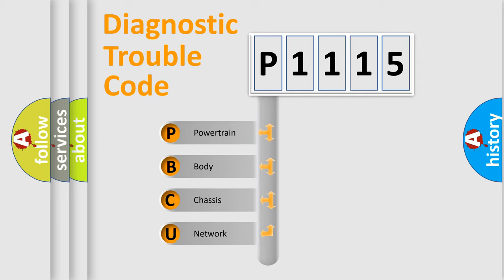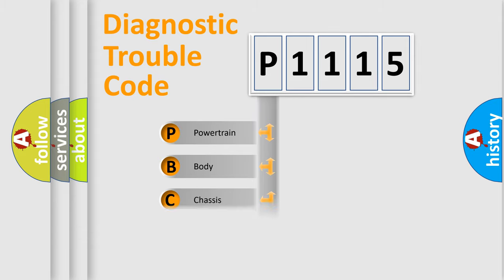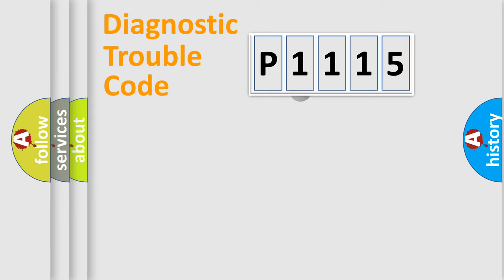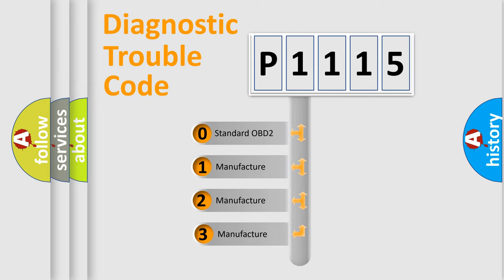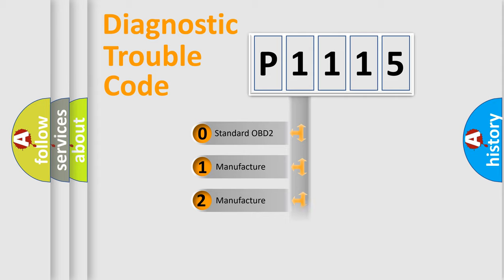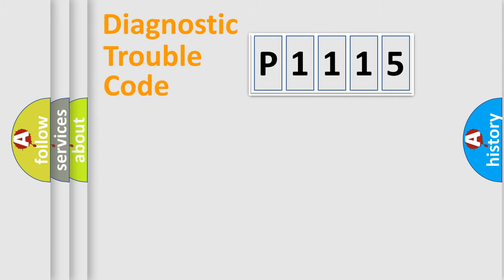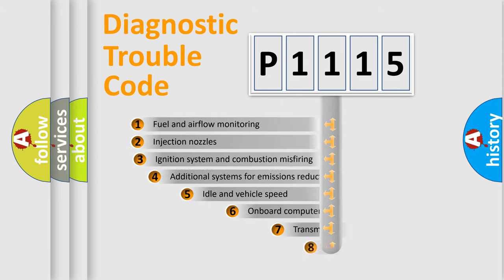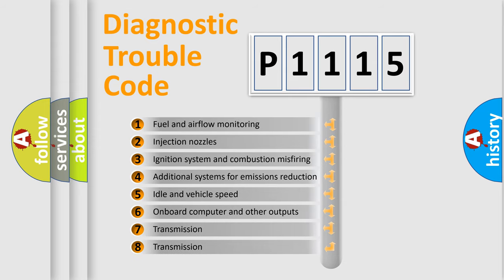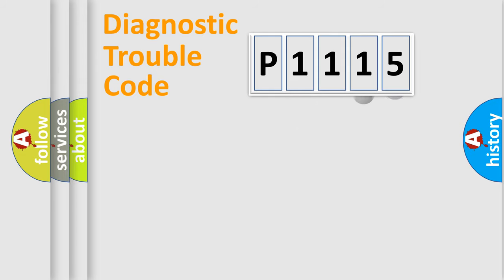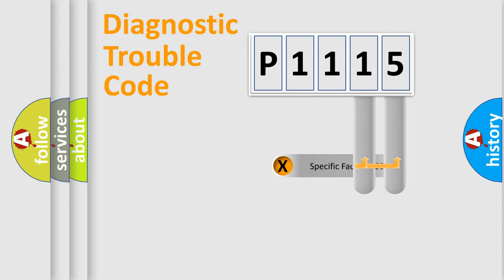We divide the electric system of an automobile into four basic units: Powertrain, Body, Chassis, and Network. This distribution is defined in the first character of the code. If the second character is zero, it is a standardized error. In the case of numbers 1, 2, or 3, it is a more specific car-specific error. The third character specifies a subset of errors, and this distribution is valid only for the standardized DTC code. Only the last two characters define the specific fault of the group.